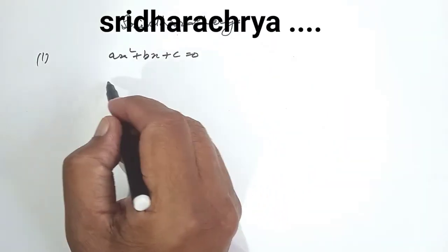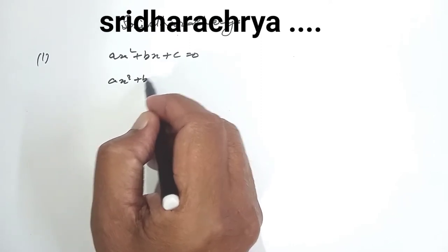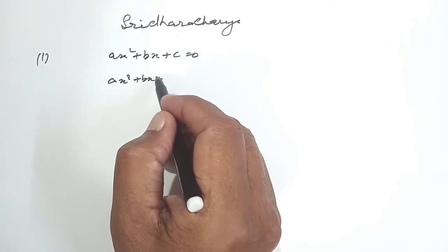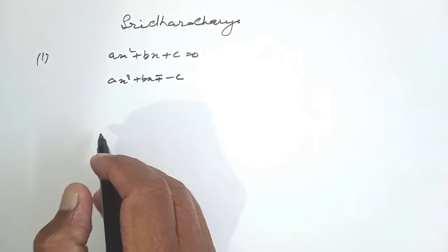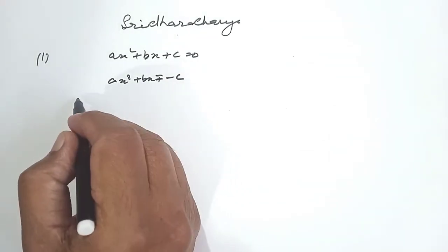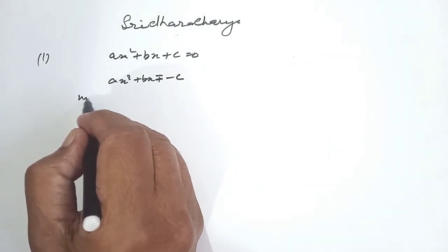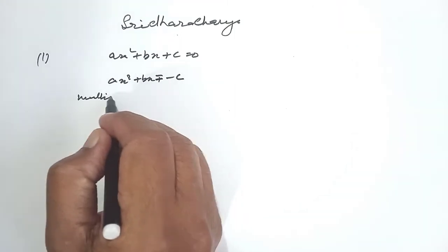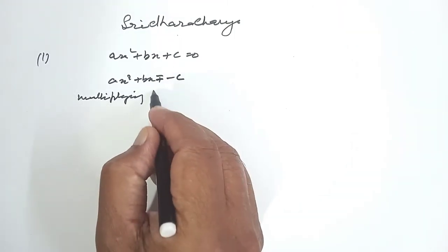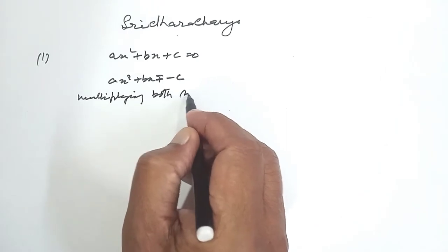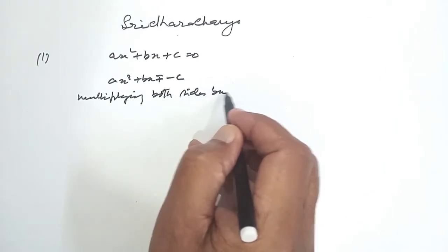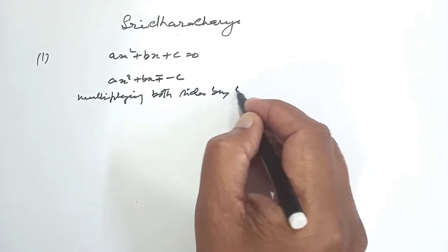So, ax² + bx = -c. Multiplying both sides by 4a,